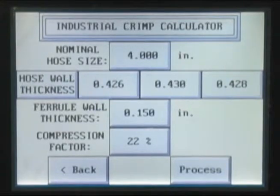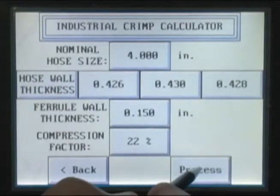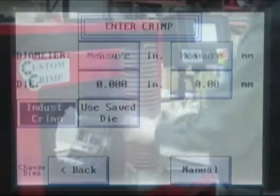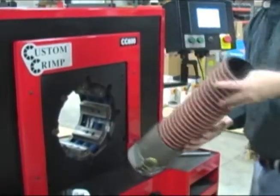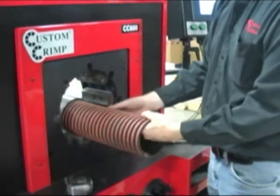Press the Process button, and the ACT Controller will calculate the finished crimp diameter. Install the correct die set and proceed to crimp the hose in the normal manner.